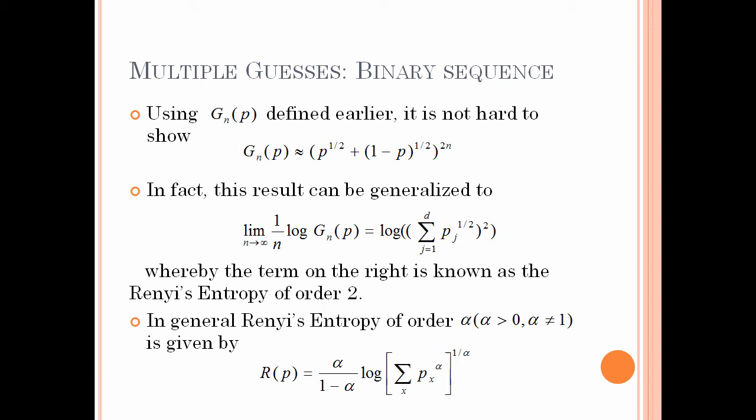This result can be generalized to non-binary sources, where the relevant term is known as the Rényi entropy of order 2. In general, Rényi entropy of order alpha (for positive alpha ≠ 1) is given by: H_α(P) = (α/(1-α)) · log(Σ p_i^α), with the result raised to the power 1/α. This is quite useful when considering moments of guessing beyond the expected value, and from an asymptotic perspective, the guessing number can be characterized in terms of Rényi entropy as word size goes to infinity.